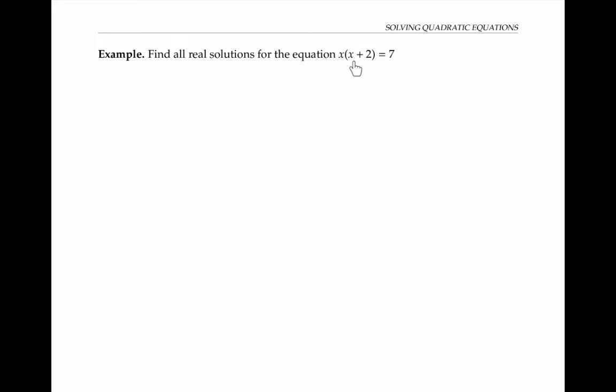Now let's find solutions for the equation x times x plus two equals seven. Some people might be tempted to say that if two numbers multiply to equal seven, then one of them must equal one and the other equals seven, or maybe negative one and negative seven. But that's faulty reasoning, because x and x plus two don't have to be whole numbers — they could be fractions or even irrational numbers. So instead, let's rewrite this equation in standard form by multiplying out to get x squared plus two x minus seven equals zero.